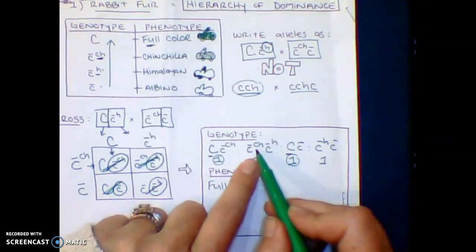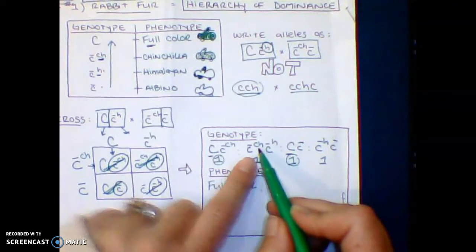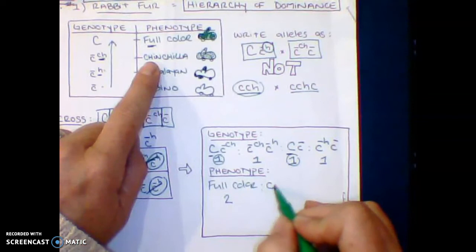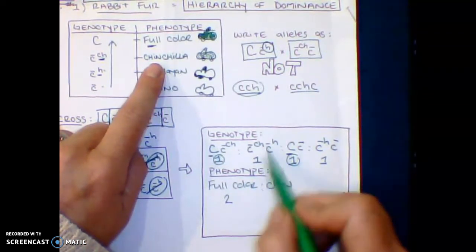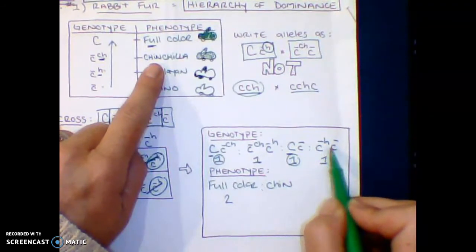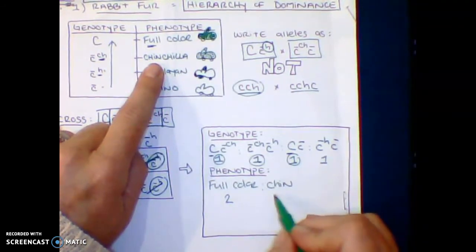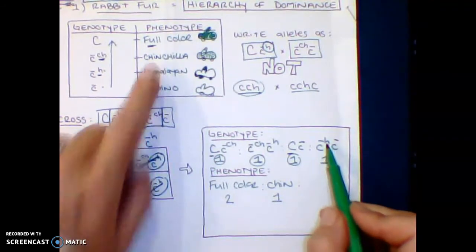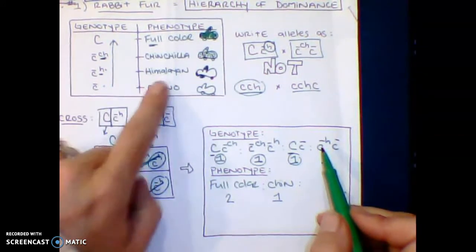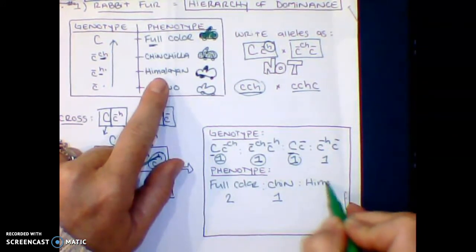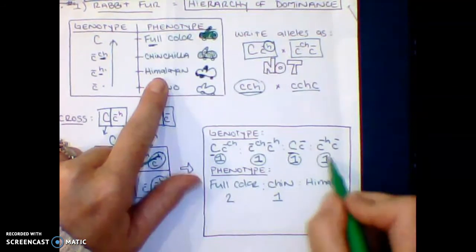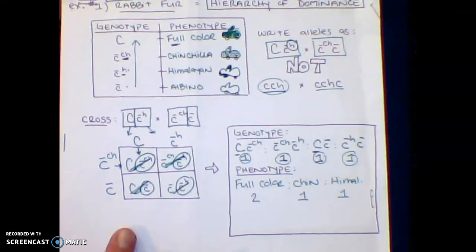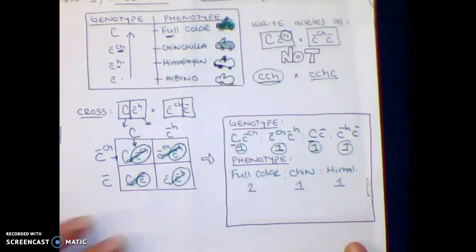The next one I have is c CH and H. So c CH is higher up, so that's the color he's going to be, which is a chinchilla. So you say chinchilla. How many do I have? I have one. This one doesn't have a c CH, so I'm going to go ahead and just circle him so I know that he's done. One. And then the last one you have is the H is higher up than the C. So this rabbit is actually going to be Himalayan. And again, how many do I have? One. So that's how you guys would do a hierarchy of dominance if you had a multiple allele situation.